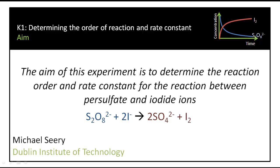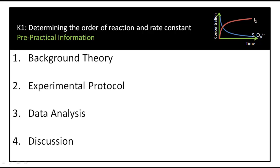Welcome to experiment K1. The aim of this experiment is to determine the reaction order and rate constant for the reaction between persulfate and iodide ions. In this pre-practical information, we're going to look at the background theory, the experimental protocol you'll do in the lab, how to complete the data analysis, and consider some points for discussion.